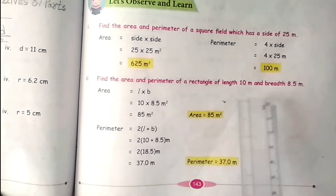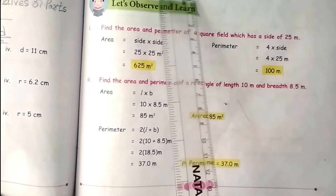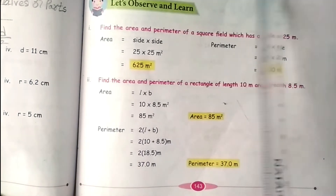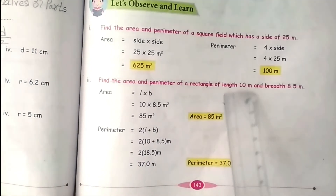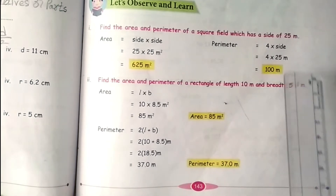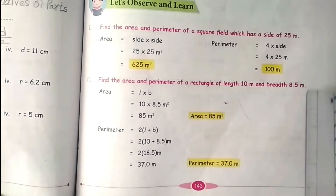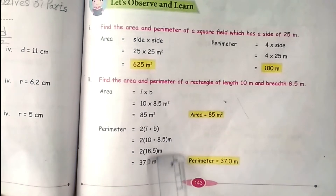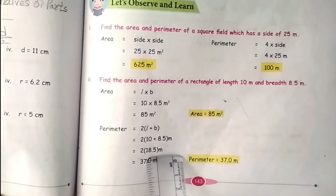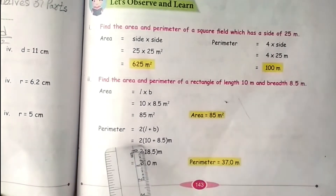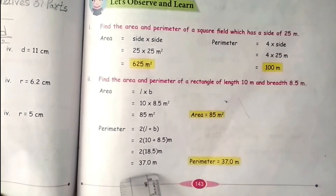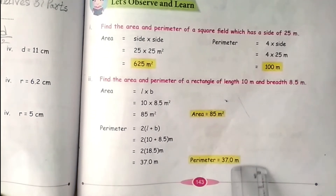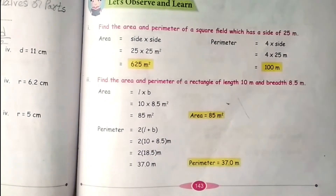Now coming to the perimeter. The formula is 2 into length plus breadth units. So here, 10 plus 8.5 equals 18.5, and multiplying by 2 gives 37 metres. So the perimeter is equal to 37 metres.